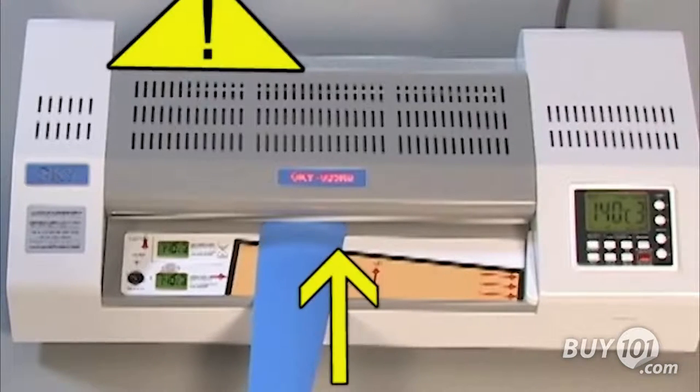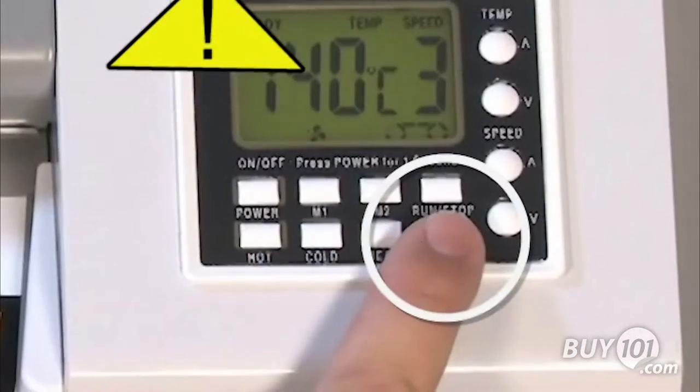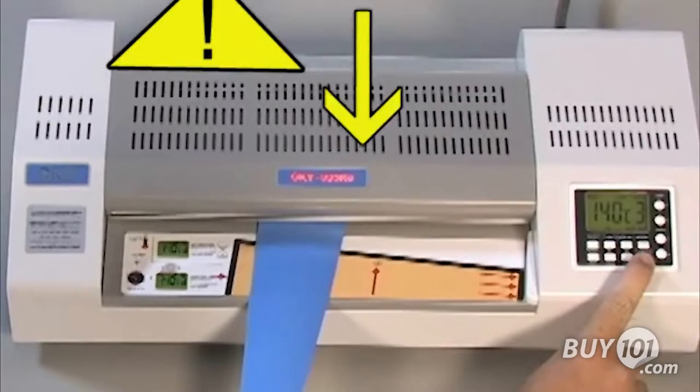Warning! To avoid injury, keep hands, jewelry, clothing, and other objects away from the laminator input slot. Objects placed in the slot are pulled into the machine automatically. If this happens, press and hold the red reverse button to eject the object.